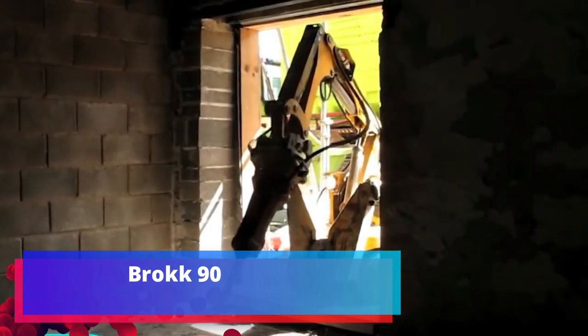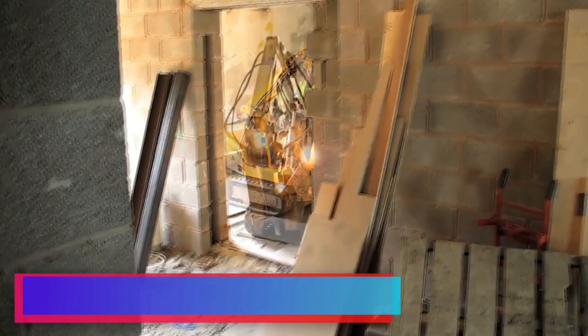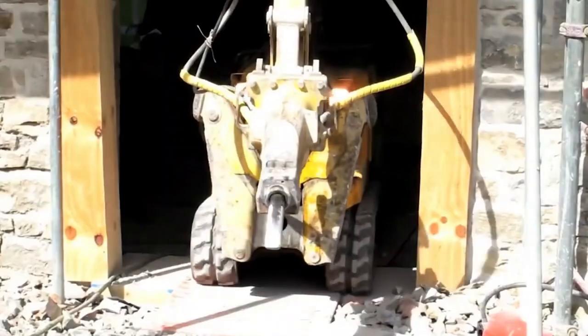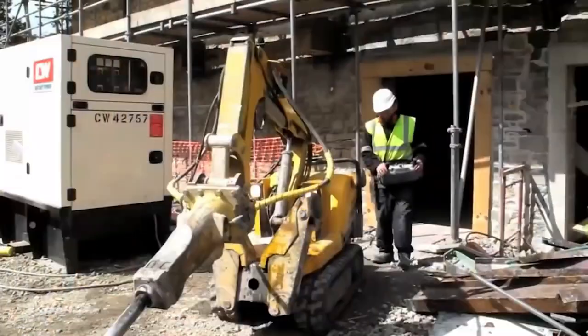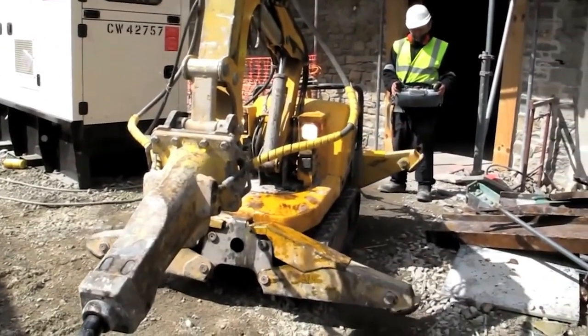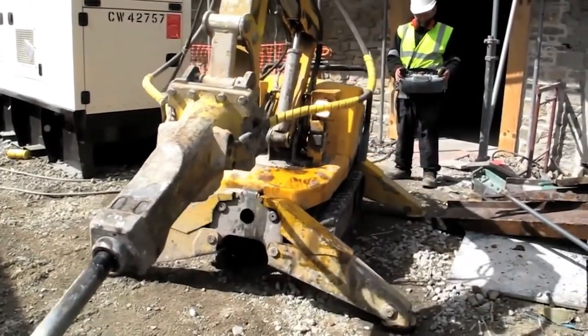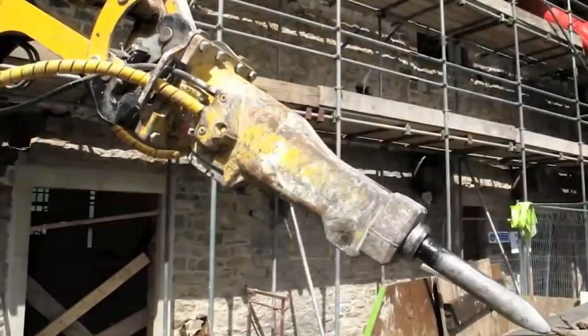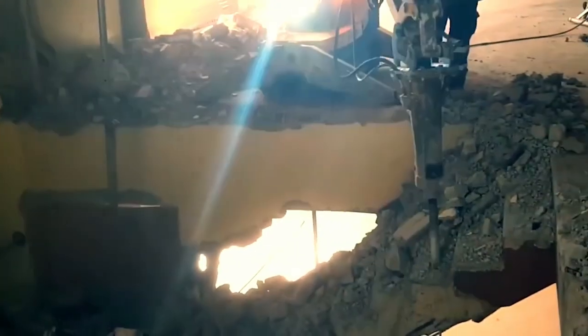Brock 90. Maneuverable machine capable of producing dismantling in rooms where previously only hand tools were used. Brock 90 combines a compact chassis, powerful 11 kilowatt electric engine, and specially designed three section manipulator 3.6 meters long resistant to shock loads.